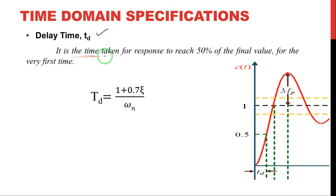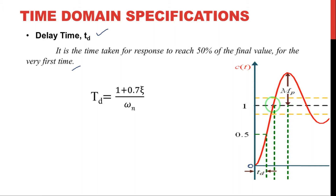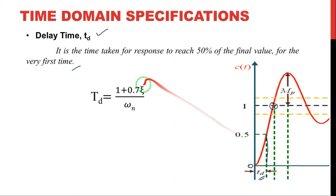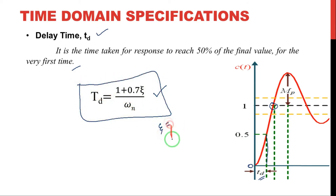Delay time is defined as the time taken for the response to reach 50 percent of the final value for the very first time. Starting from initial condition at t equal to zero, the final value equals one. The time taken to reach 50 percent of the final value is called delay time. The formula for delay time is: t_d = (1 + 0.7ζ) / ωn, where ζ is the damping ratio and ωn is the natural frequency in radians per second.